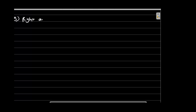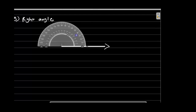The third type is the right angle. An angle of measure 90 degrees is a right angle. The measure of this angle is 90 degrees. Here are points A, B, and C marking the right angle.